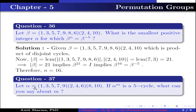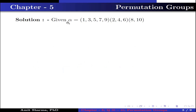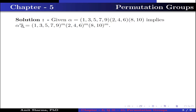Question number 37. Let alpha be the permutation (1, 3, 5, 7, 9)(2, 4, 6)(8, 10). If alpha to the power m is a 5-cycle, what can you say about m? Given alpha is the product of permutations (1, 3, 5, 7, 9), (2, 4, 6), and (8, 10). This implies alpha to the power m equals (1, 3, 5, 7, 9)^m times (2, 4, 6)^m times (8, 10)^m.